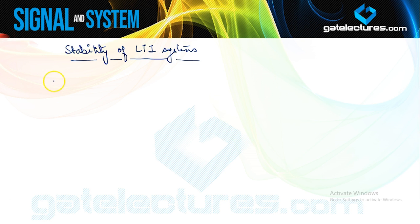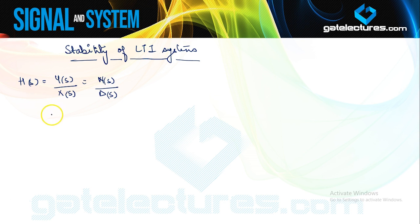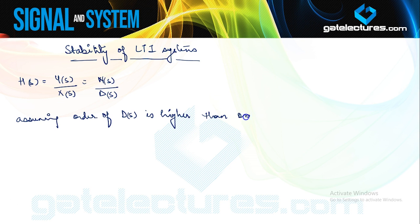Now we are going to look at different criteria to check this. We have already seen that system transfer function H(S) is defined as Y(S) upon X(S). I am expressing it in terms of numerator N(S) and denominator D(S). We assume that the order of D(S) is higher than N(S) for this rational function to be a proper rational function.